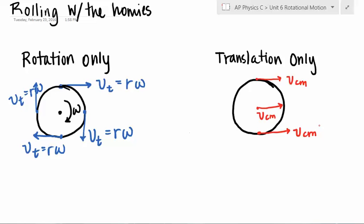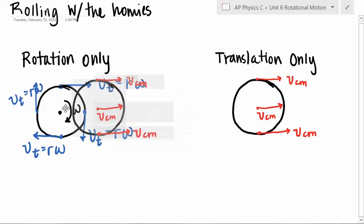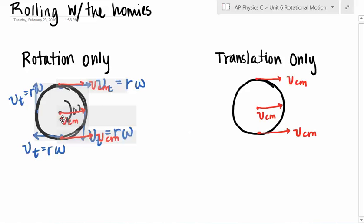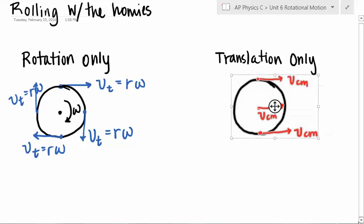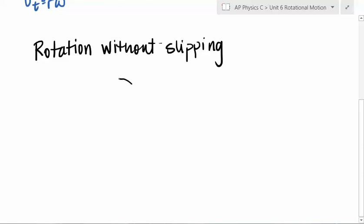Now, if it is rolling and translating at the same time, imagine taking this disc with its translational motion and superimposing it, putting it on top of the rotation motion. So we're going to basically add these two motions together. For rotation without slipping, that means that at the bottom, where the object comes in contact with the surface, this point right here has to have a velocity of zero. It has to be momentarily stuck to the surface.